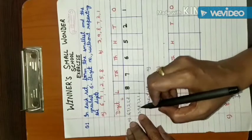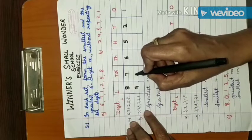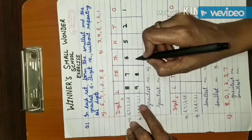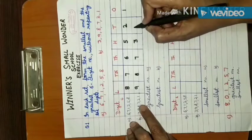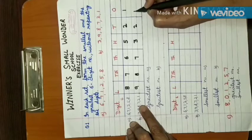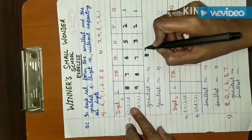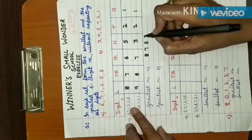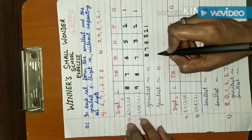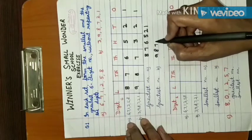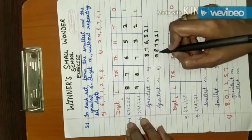For the second set, the largest digit is 9, then 8, 7, 3, 2, 1. So the greatest number for set one is 8,76,521 and for set two is 9,87,321.